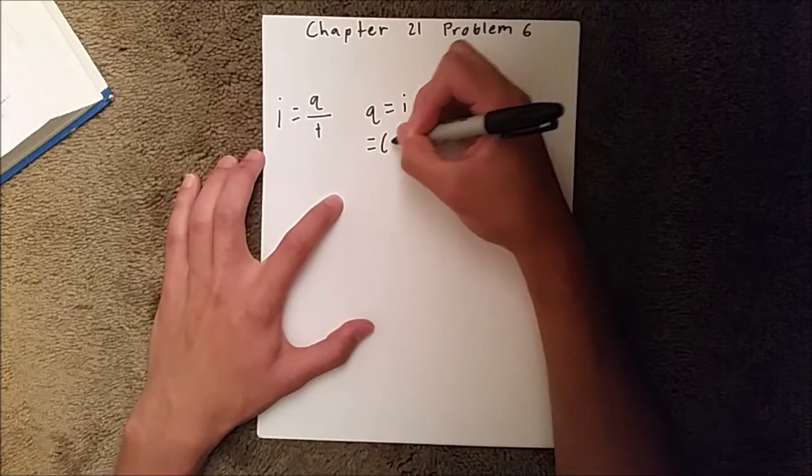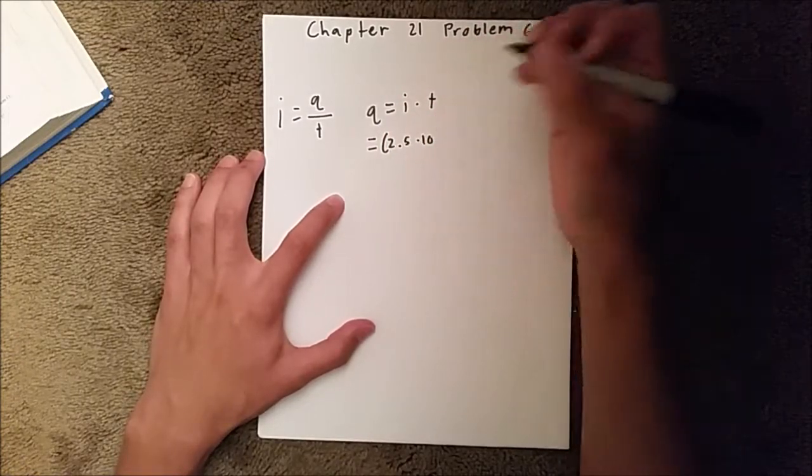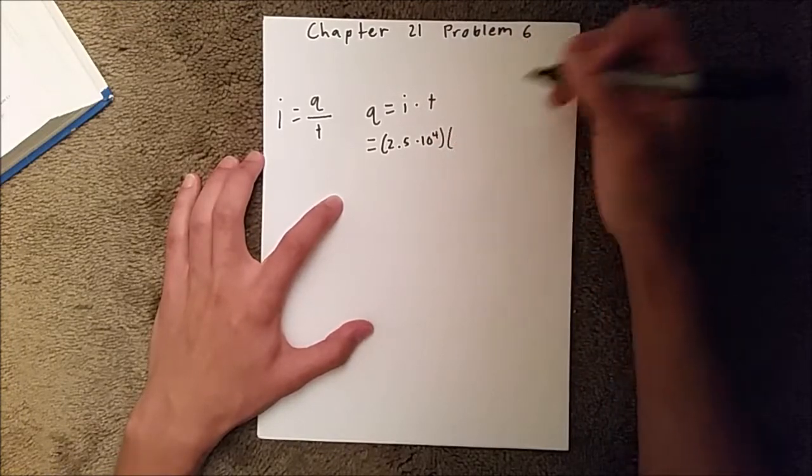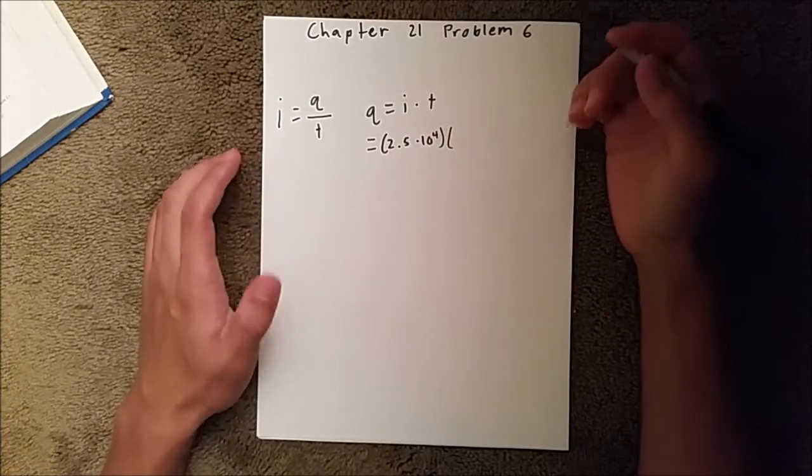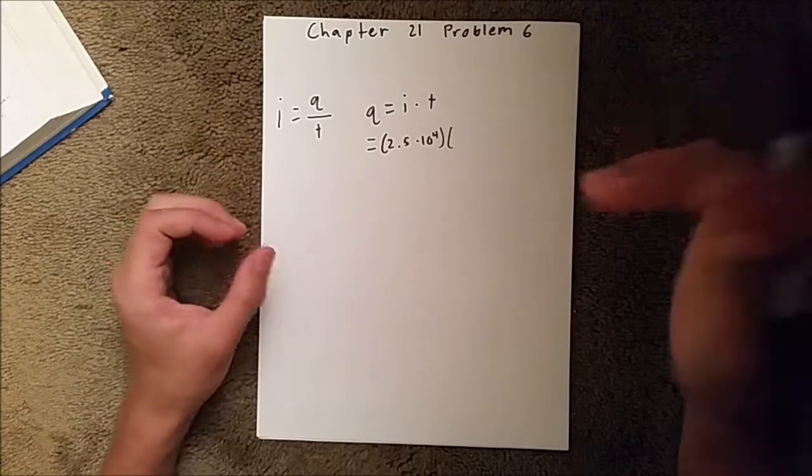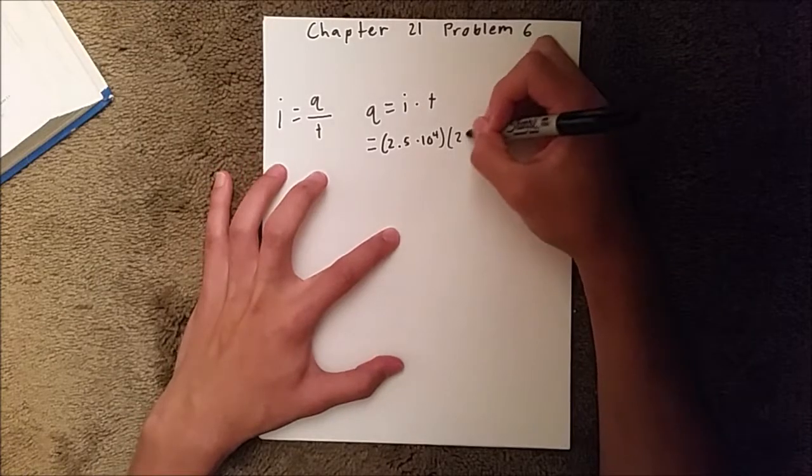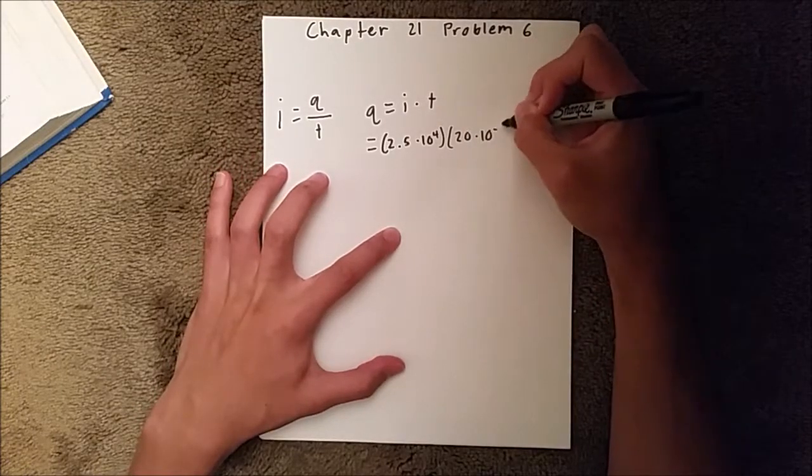So for our current, we're given 2.5 times 10 to the 4th amps, and for our time, we're given 20 mu seconds, and whenever you see mu, you know it's that number times 10 to the negative 6th, so it's going to be 20 times 10 to the negative 6th,